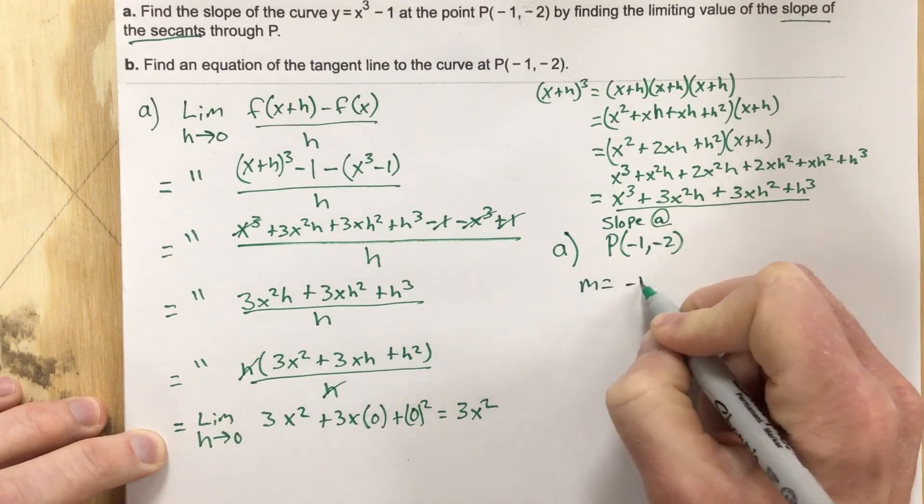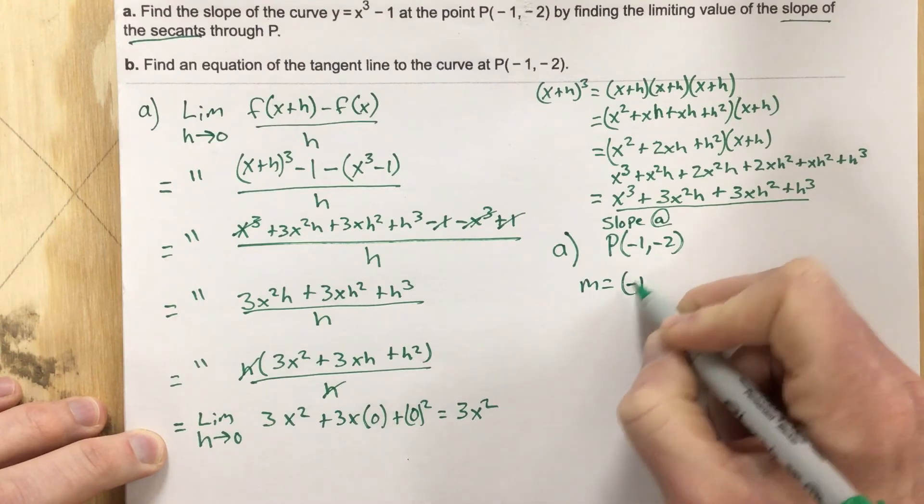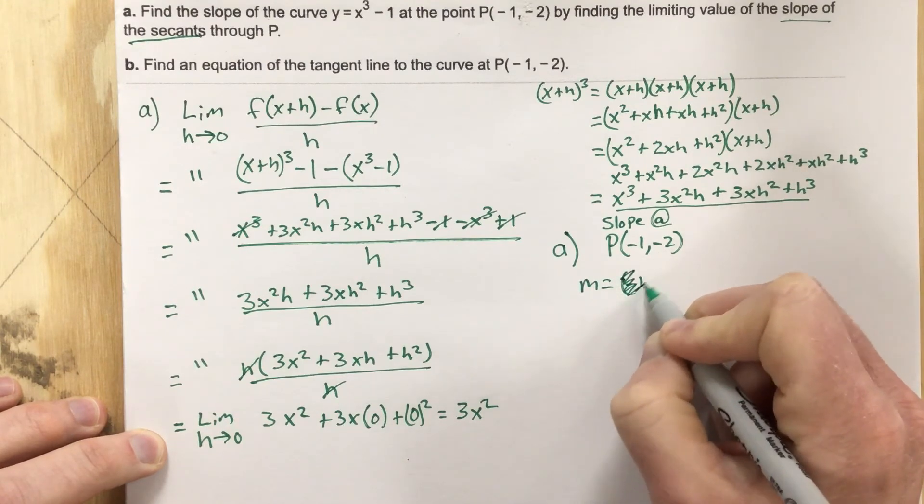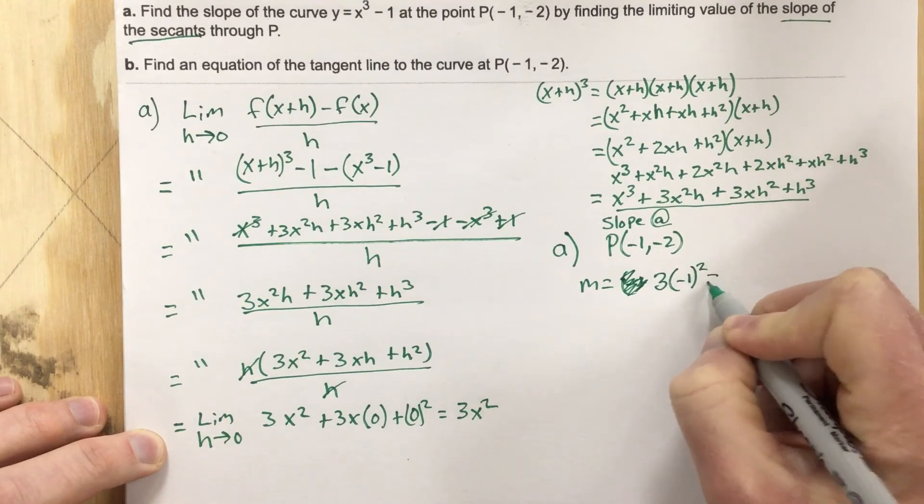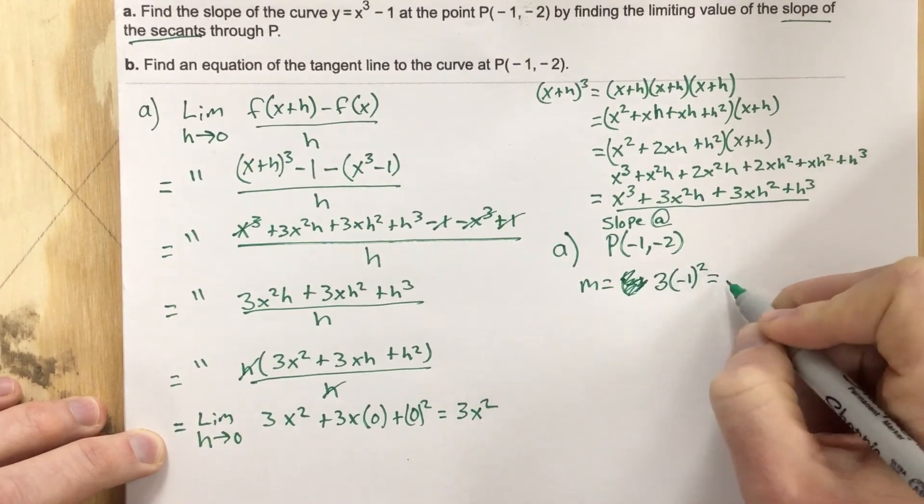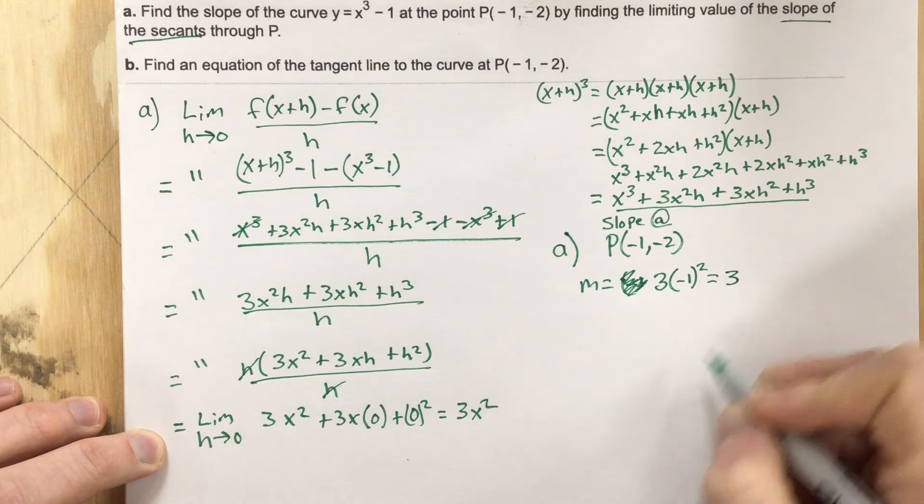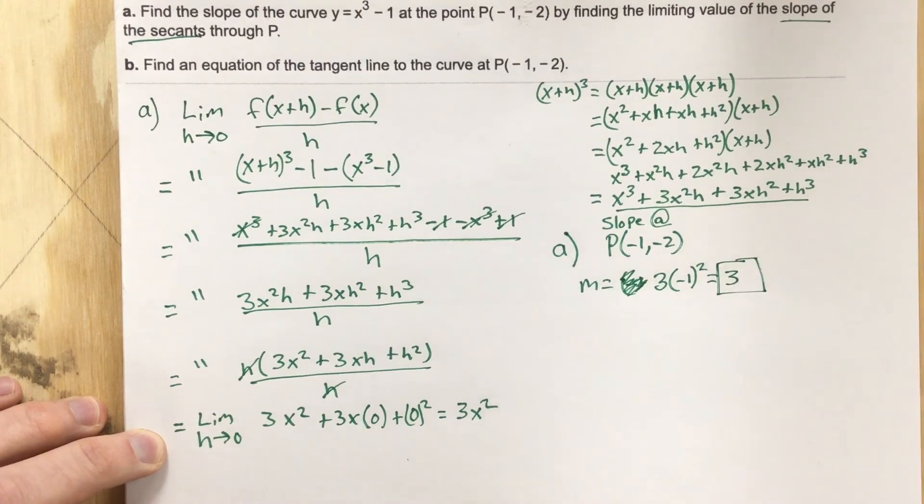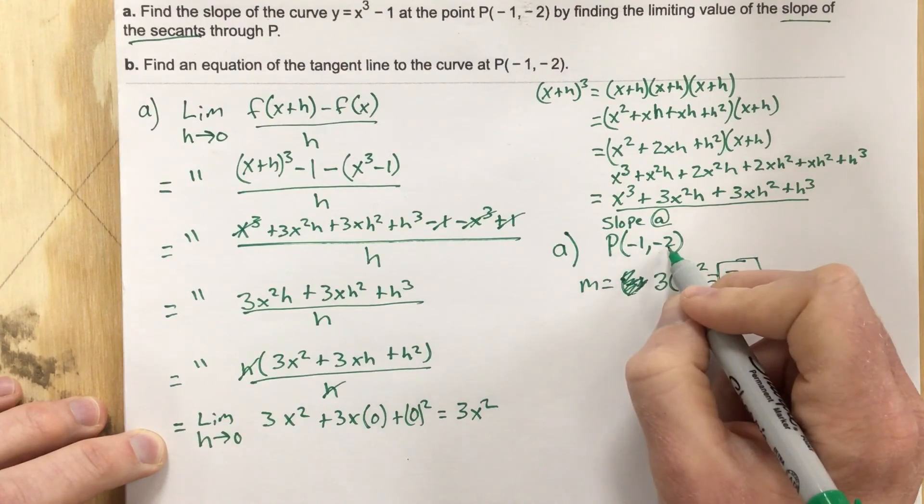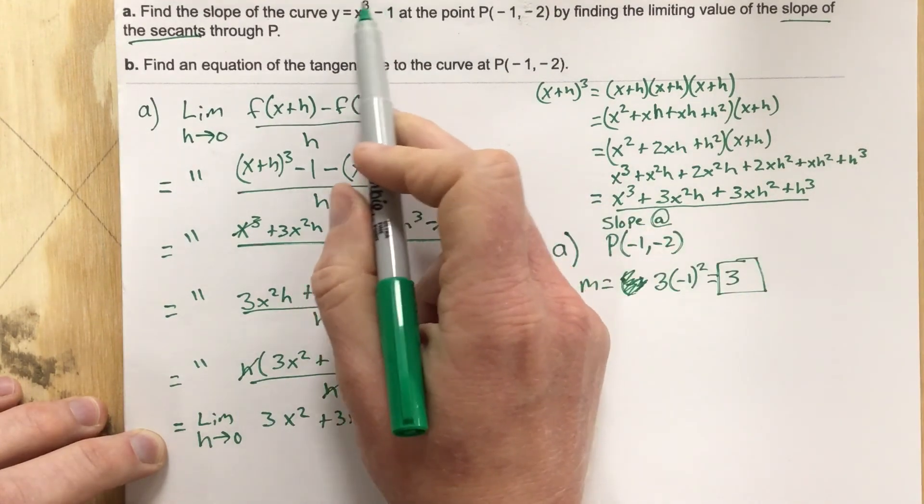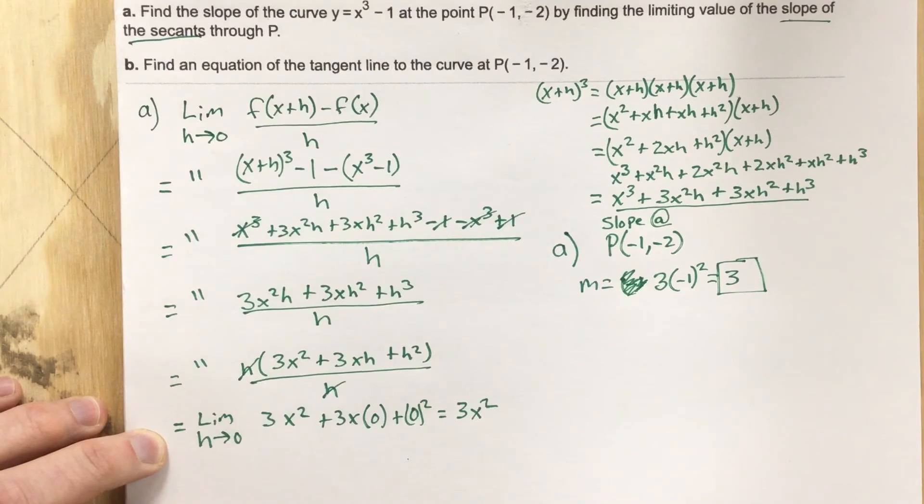So m equals, don't want to say that. M equals 3, negative 1 squared. Negative 1 squared just ends up with a slope of 3. So this is our solution for part A. That's our slope at the point P, negative 1, negative 2, for that function there, x cubed minus 1.